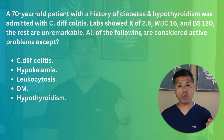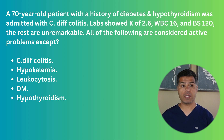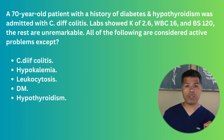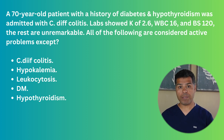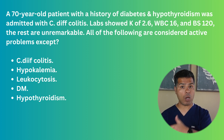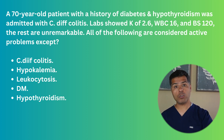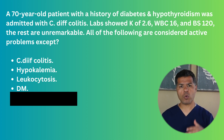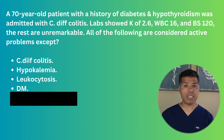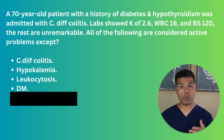A 70-year-old patient with a history of diabetes and hypothyroidism admitted with C. diff colitis. Labs showed potassium of 2.6, WBC of 16, and blood sugar of 120; the rest are unremarkable. Which of the following are considered active problems — C. diff colitis, hypokalemia, leukocytosis, diabetes, or hypothyroidism? C. diff colitis is the primary active problem. Hypokalemia requires replacement and monitoring. Leukocytosis needs to be monitored. Diabetes treatment is likely to be changed and needs close monitoring. The correct answer is hypothyroidism — there is no need to change treatment or closely monitor it during this hospital stay, so it doesn't need to be mentioned in your case presentation.